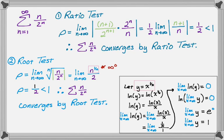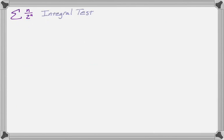Let's try the integral test, because x over two to the x looks like something I could integrate. I kind of enjoy integrating things, so sometimes I'll use the integral test just for the challenge of an integral — which is probably not a great idea on a quiz or test, but let's do this. First we define f(x) as the nth term with n's replaced by x's, so f(x) = x/2^x. For the integral test, I need f to be positive, continuous, and decreasing eventually.